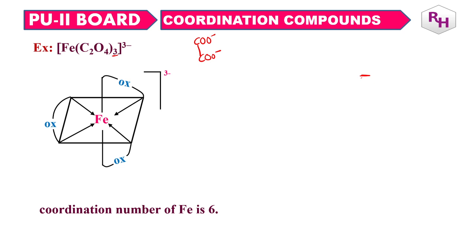Do not have any confusion. A common mistake is writing the coordination number as 3 for Co(en)3 — that is wrong and you will not get any marks for that. Because en is a bidentate ligand, you multiply the number of ligands by 2.